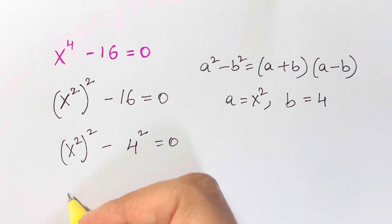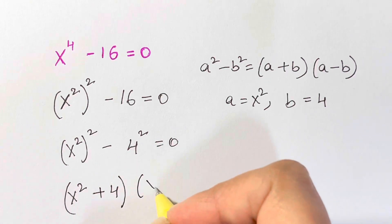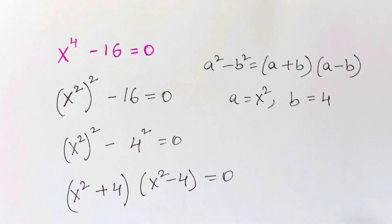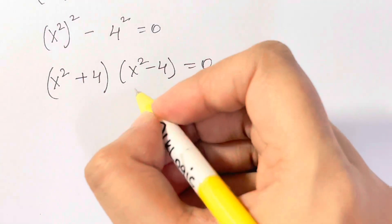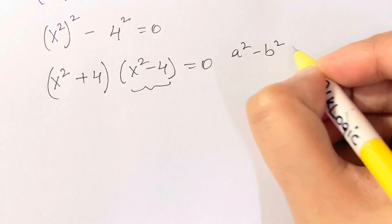b is 4. Now we're going to write that: (x squared plus 4) times (x squared minus 4) is equal to 0. Now again, we find an identity here, the same one: a squared minus b squared, which is (a plus b) times (a minus b).